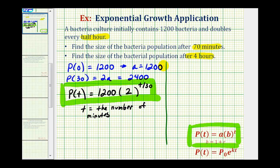So for the first question, we want to determine the value of P(70), which is equal to 1,200 times two raised to the power of 70 divided by 30, or seven-thirds.